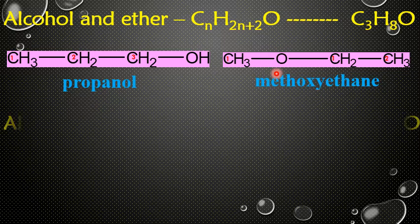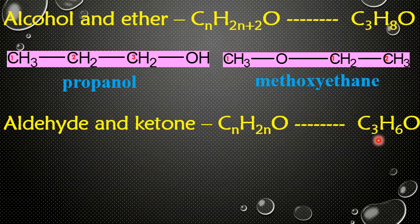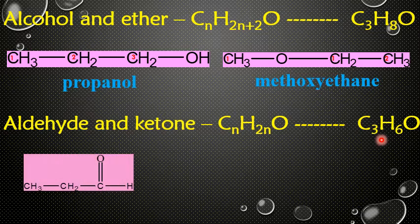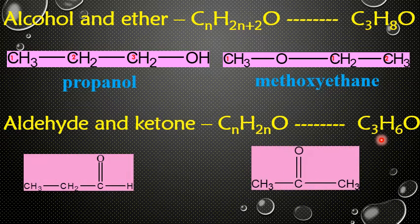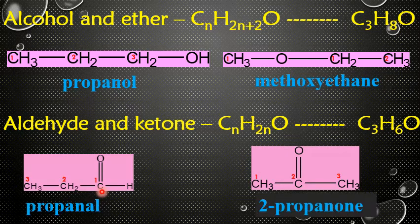For aldehydes and ketones, the common molecular formula is CnH(2n)O. If a molecule has three carbons, the molecular formula is C3H6O. We can draw an aldehyde and a ketone with this formula. Propanal has an aldehyde group as the functional group, while propanone consists of a ketone as the functional group.